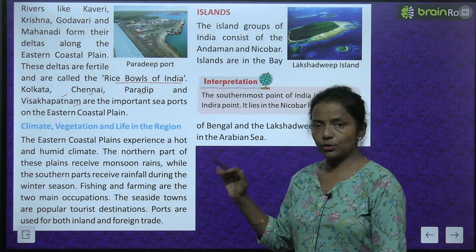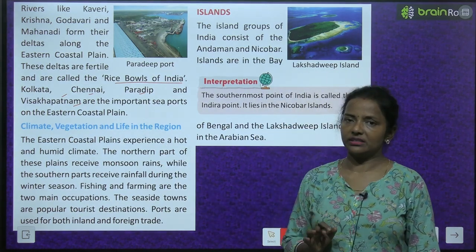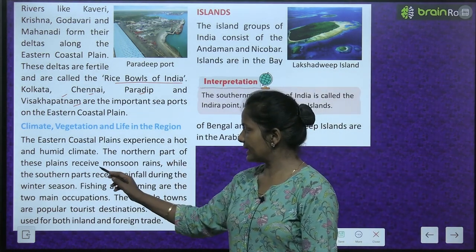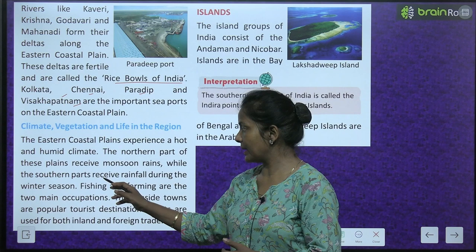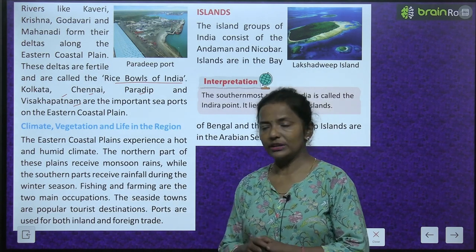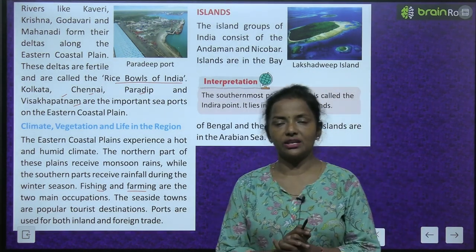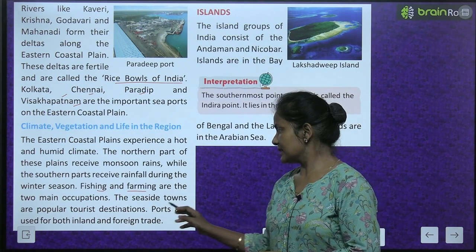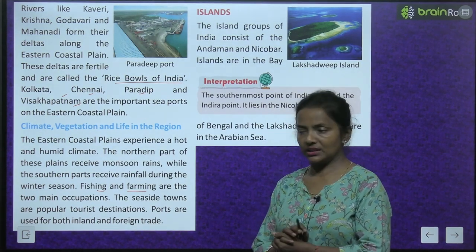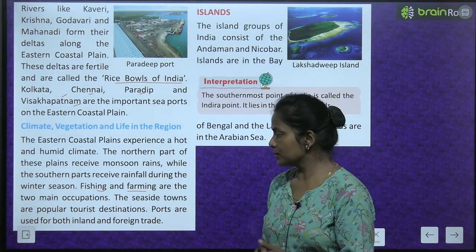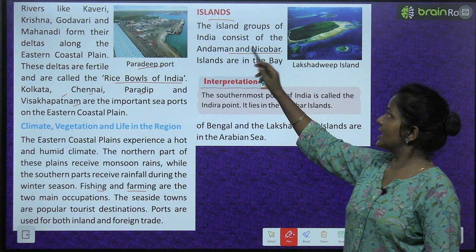The eastern coastal plains experience a hot and humid climate. The northern part of these plains receives monsoon rain, while the southern parts receive rainfall during the winter season. Fishing and farming are the two main occupations. The seaside towns are popular tourist destinations, and the ports are used for both inland and foreign trade.